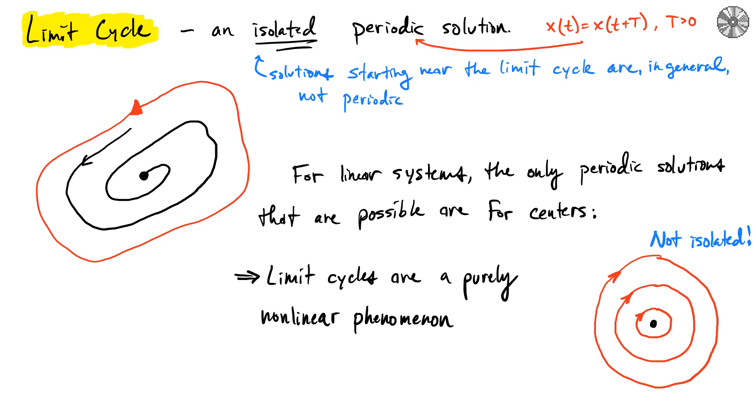A periodic solution just means that there's a period capital T for which the state returns back to its original state every T amounts of time. So what this is saying is that X at time T is equal to the state at time T plus this period, and that would happen after one period, after two periods, and so on. That is essentially just the amount of time it takes to loop around this structure.